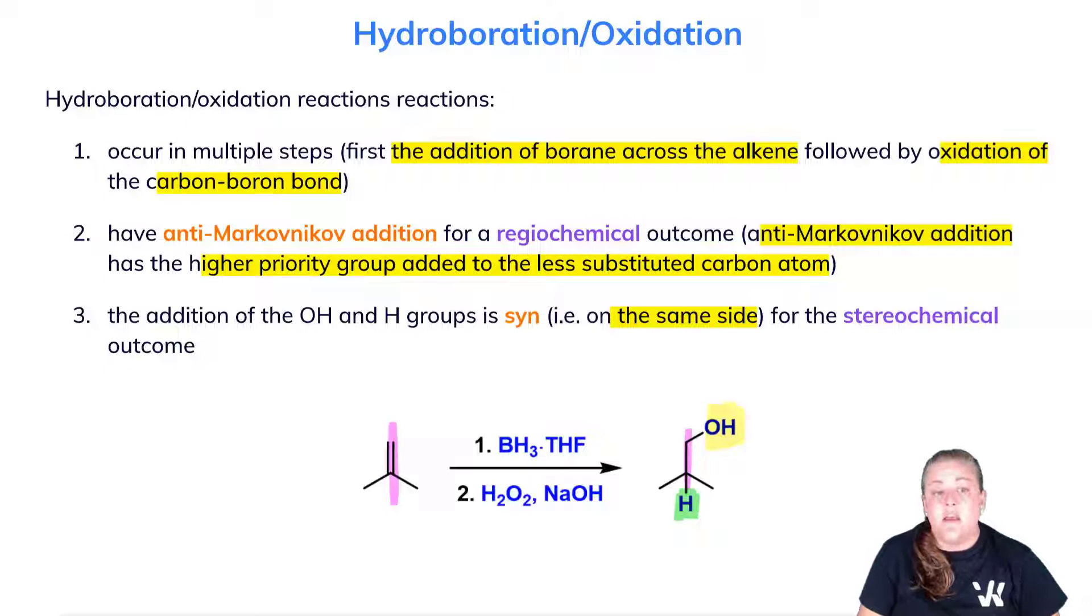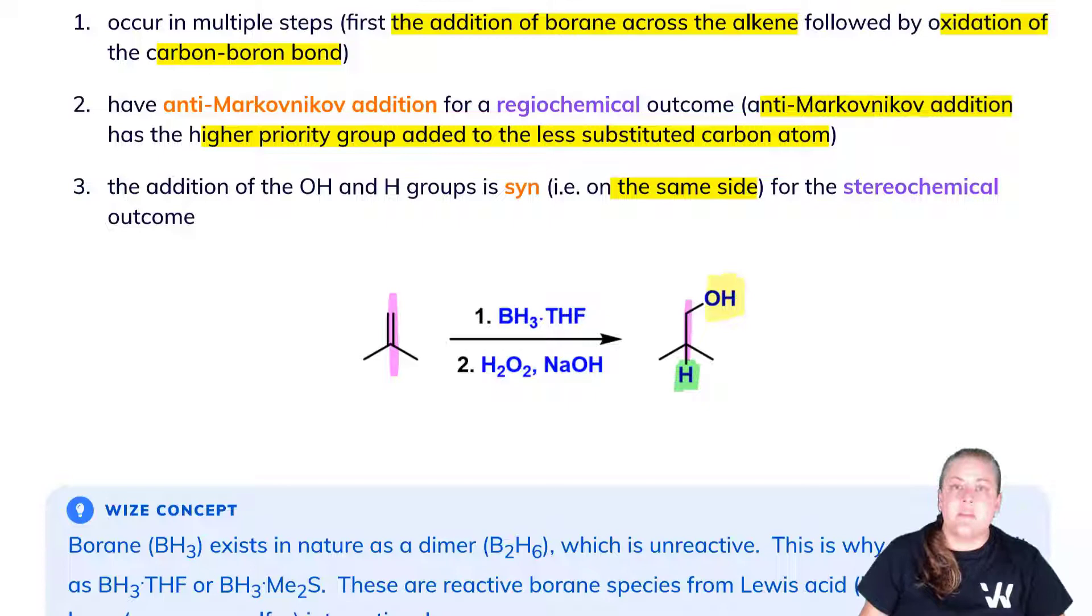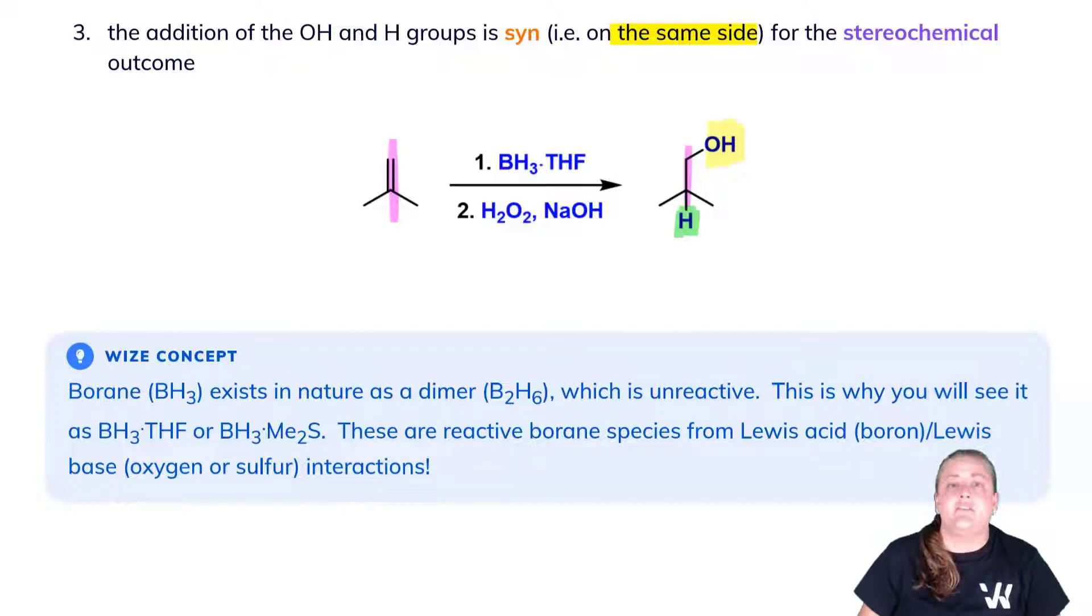Worth noting is that borane BH3 exists in nature as a dimer, since boron is electron deficient. If borane finds other borane, they will dimerize. This dimer is really robust and does not do chemistry at all.